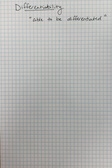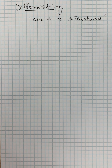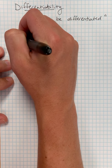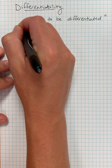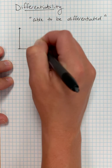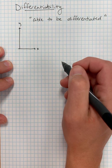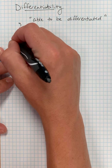Let's take some time to talk about differentiability, or the ability of a function to be differentiated. We want to see what kind of functions we can actually take the derivative of and where that's going to work. It's easy to look at this from a starting point where things aren't differentiable — in other words, where can't we take the derivative?